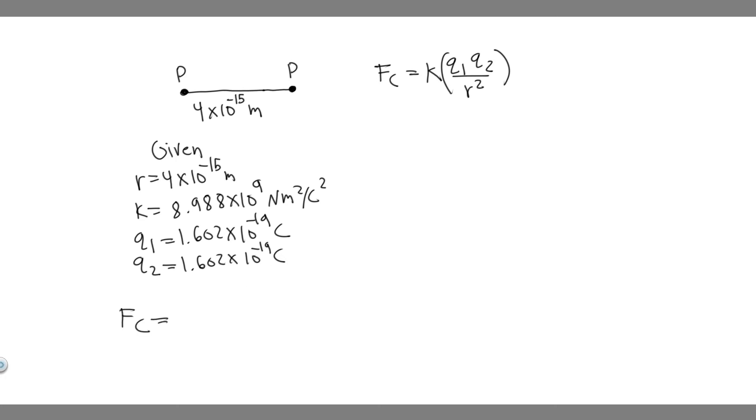So F sub C is equal to K which is 8.988 times 10 to the 9. And I'm not going to write the units, but it's all going to cancel out to Newtons anyway. And then it's 1.602 times 10 to the minus 19 times the same thing. So basically, just square it. So 1.602 times 10 to the minus 19, and then square that.